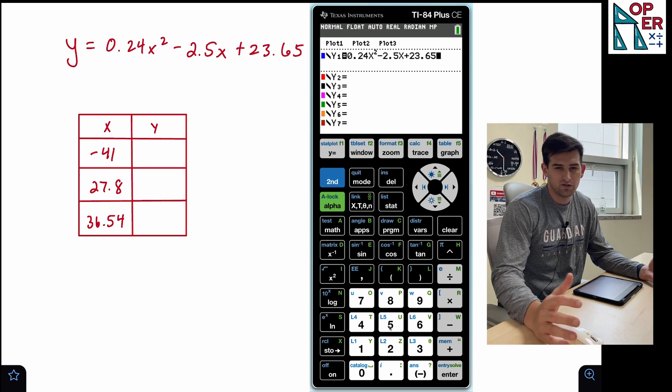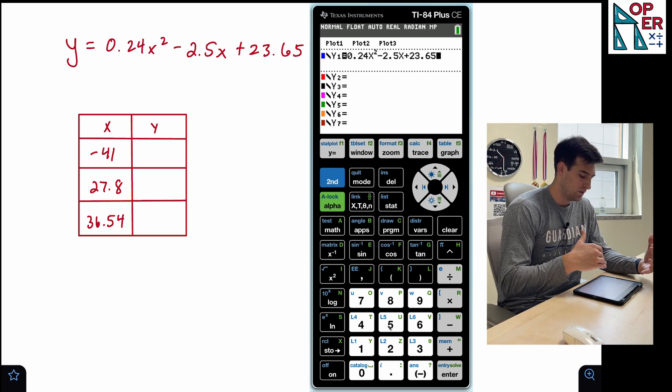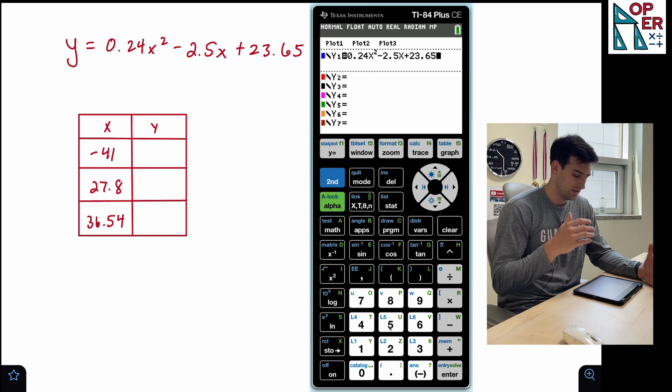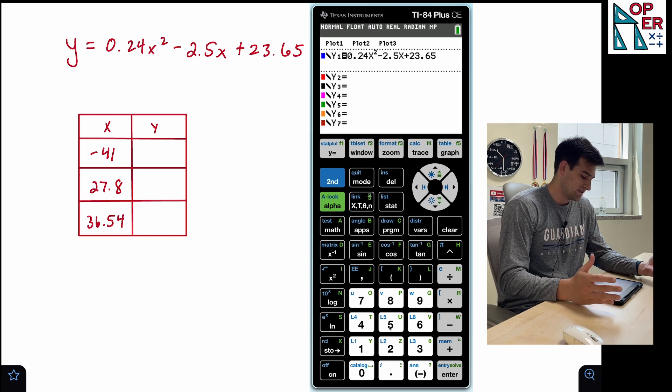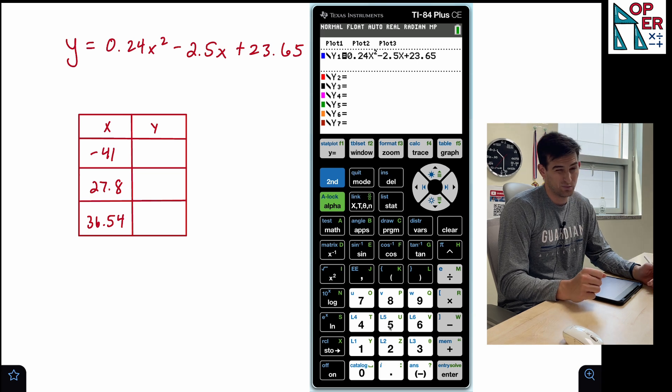So now I don't really need to look at the graph here because I'm just trying to figure out what y is when x is the following three values: when x is negative 41, when x is 27.8, and when x is 36.54.